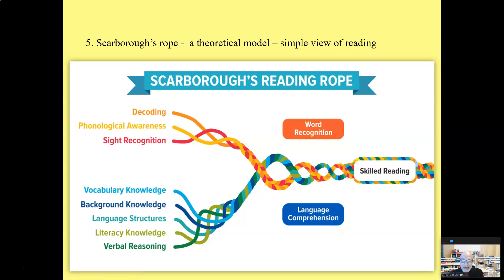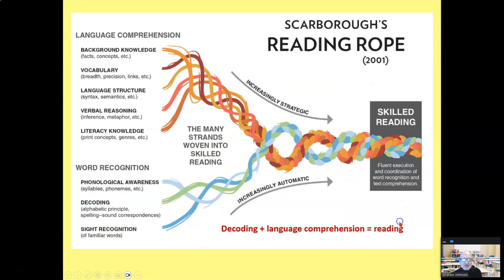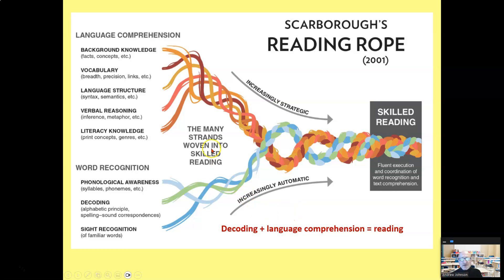Scarborough's rope is popular now. It's a theoretical model based on the simple view of reading. You have decoding on one side, language comprehension on the other, and all these little strands become closer and closer, with skilled reading being the result. Just because it's a neat and interesting model doesn't mean it's robust. It still is a simple view of reading, even though it has these nice colorful things.